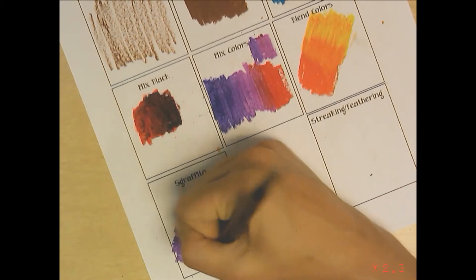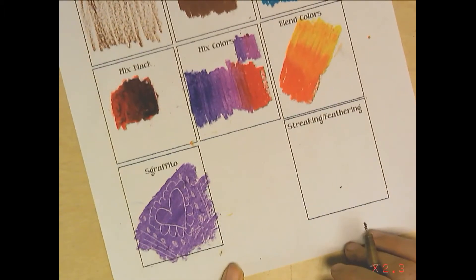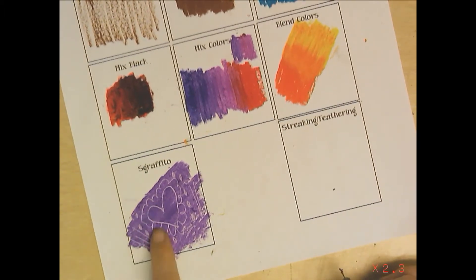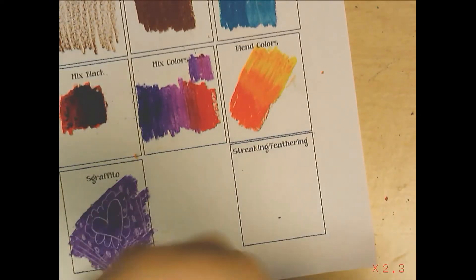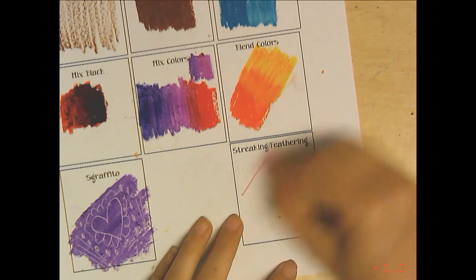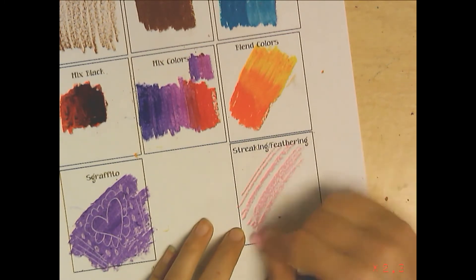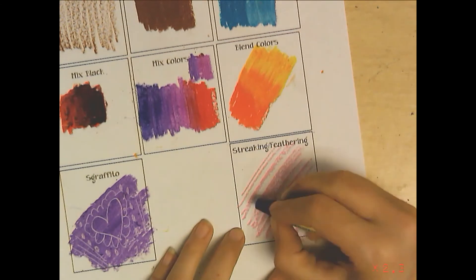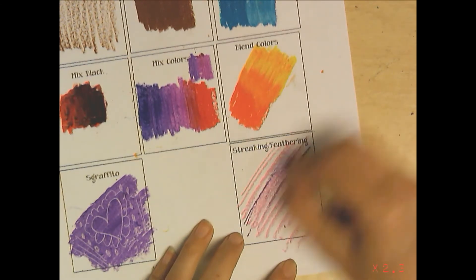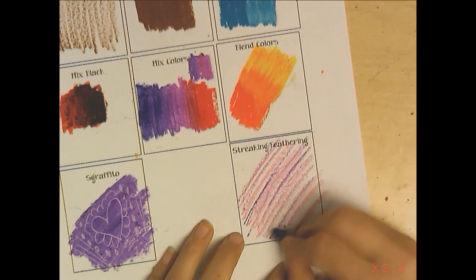That's what we're coming up with, super fun to play with. Last one is streaking or feathering, these are just kind of like directional lines so you go one direction. It's fun to play with color and you're getting a natural blend of colors there.